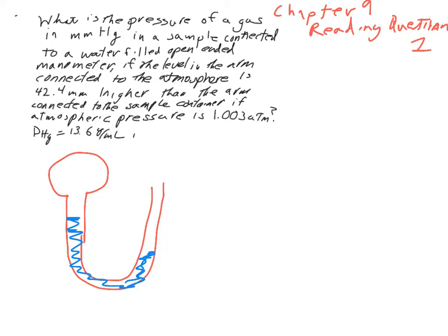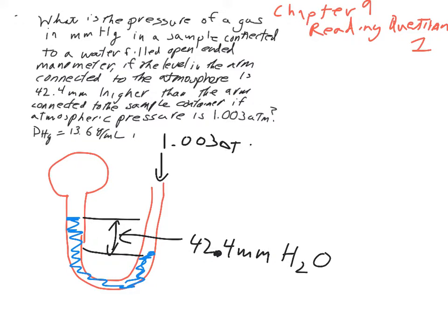We're told that the height difference is 42.4 millimeters of water. The atmospheric pressure pushing in is 1.003 atm. They want to know the pressure of the gas in millimeters of mercury.